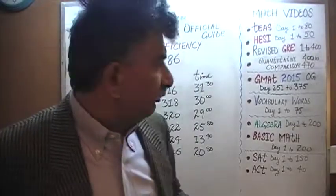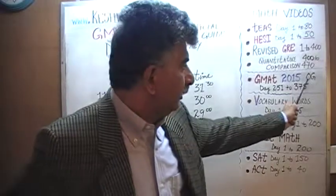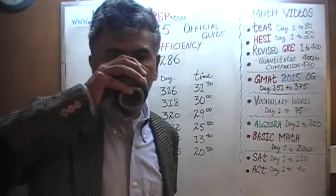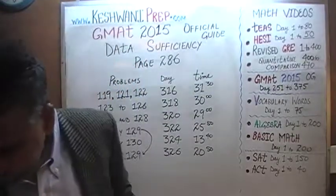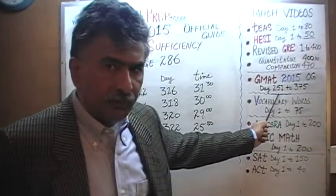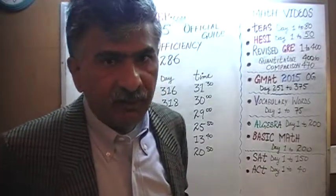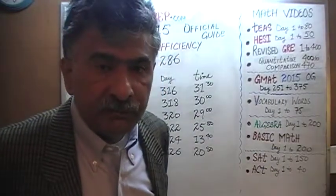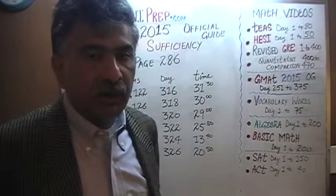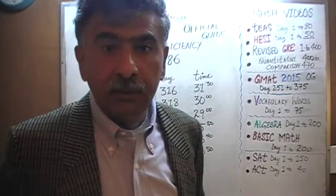You will find the solutions to all the math problems appearing in the 2015 Official Guide from day number 251 through 375. Solutions to all the data sufficiency problems are presented on even-numbered days, and solutions to all the problem solving questions are on odd-numbered days. Thank you.